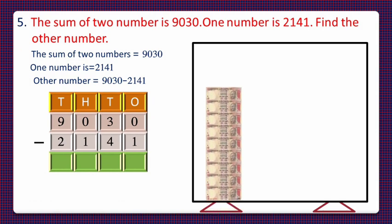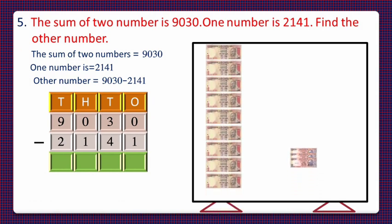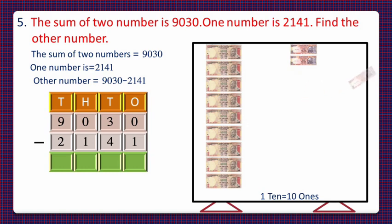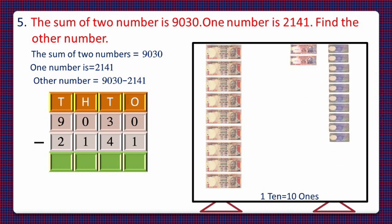Since ones are zero, we'll convert one 10-rupee note into 10 one-rupee notes, as 1 ten is equal to 10 ones. So number of tens will reduce from 3 to 2. Now on subtracting 1 from 10, 9 ones are remaining — write 9 in the ones column.